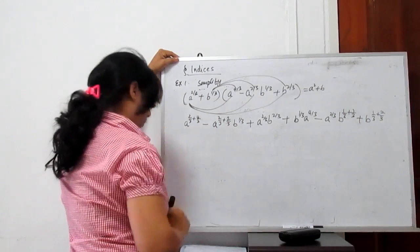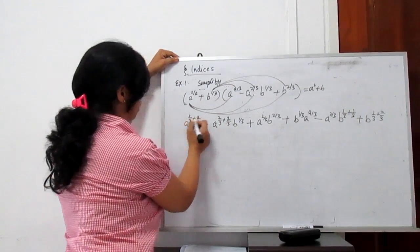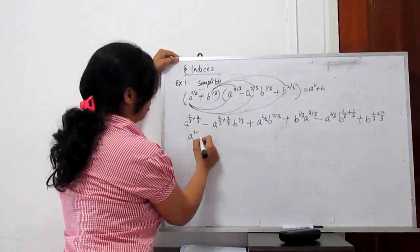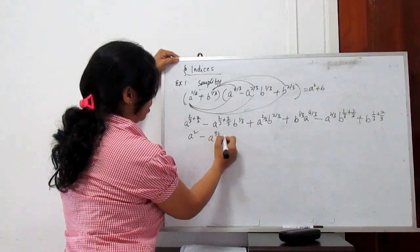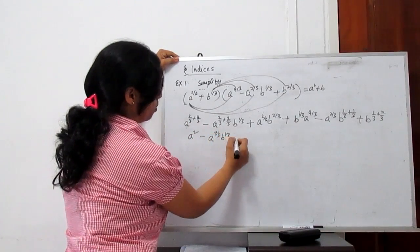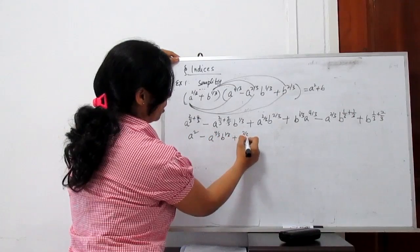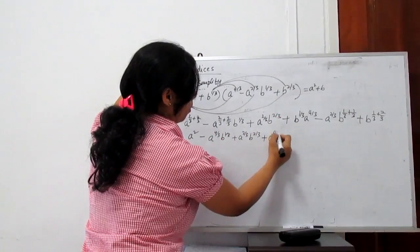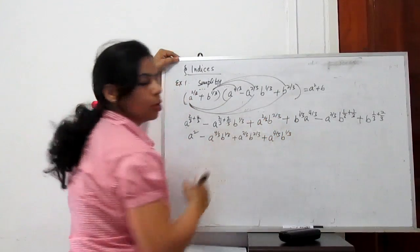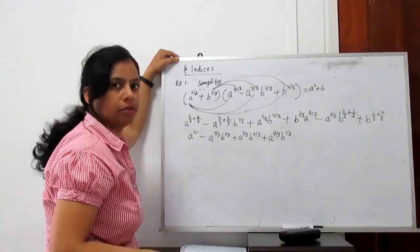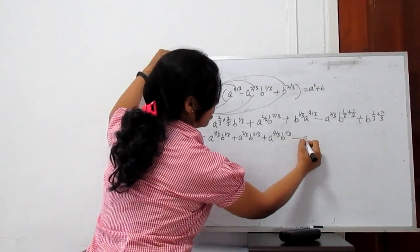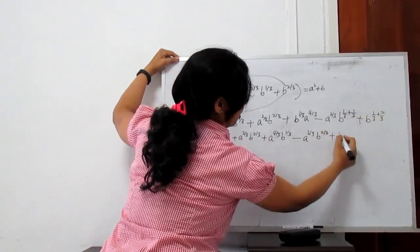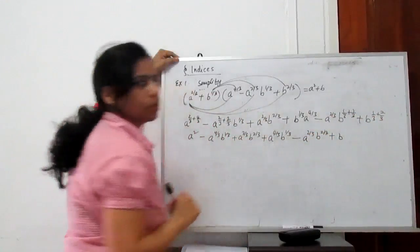Now simplify: A to the power 4 plus 2 over 3 gives A squared, minus A to the power 4 by 3 times B to the power 1 by 3, plus A to the power 2 by 3 times B to the power 2 by 3, plus A to the power 4 by 3 times B to the power 1 by 3 — by commutative property order doesn't matter — minus A to the power 2 by 3 times B to the power 2 by 3, plus B to the power 3 by 3, which is just B.